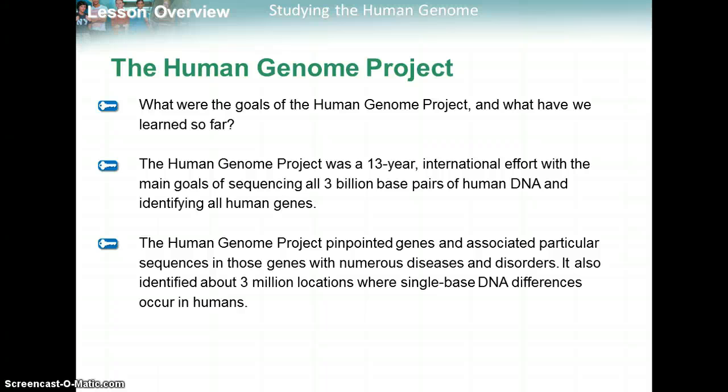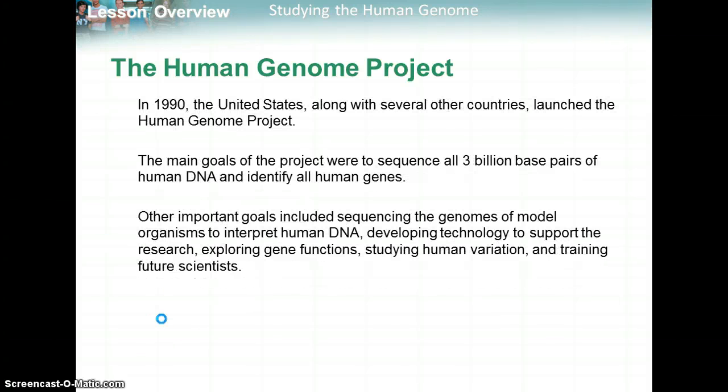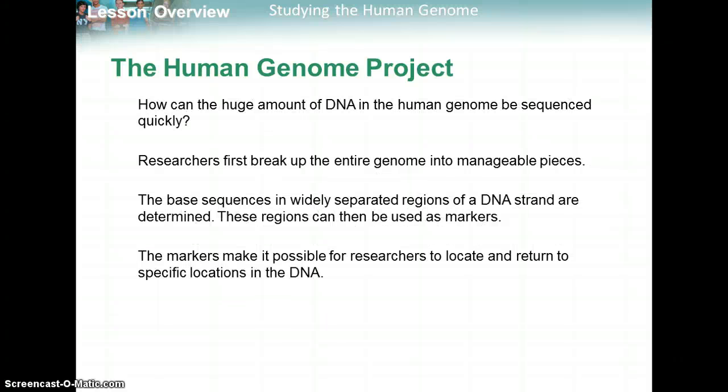Now we're going to study the Human Genome Project and go through its history. This started in the 1990s when the U.S., along with several other countries, launched the Human Genome Project. The main goals were to sequence all 3 billion base pairs of human DNA, to identify all human genes, and hopefully to help solve different genetic disorders — which is still being worked on. Other important goals included sequencing the genomes of model organisms, developing technology to support the research, exploring gene function, studying human variation, and training future scientists.